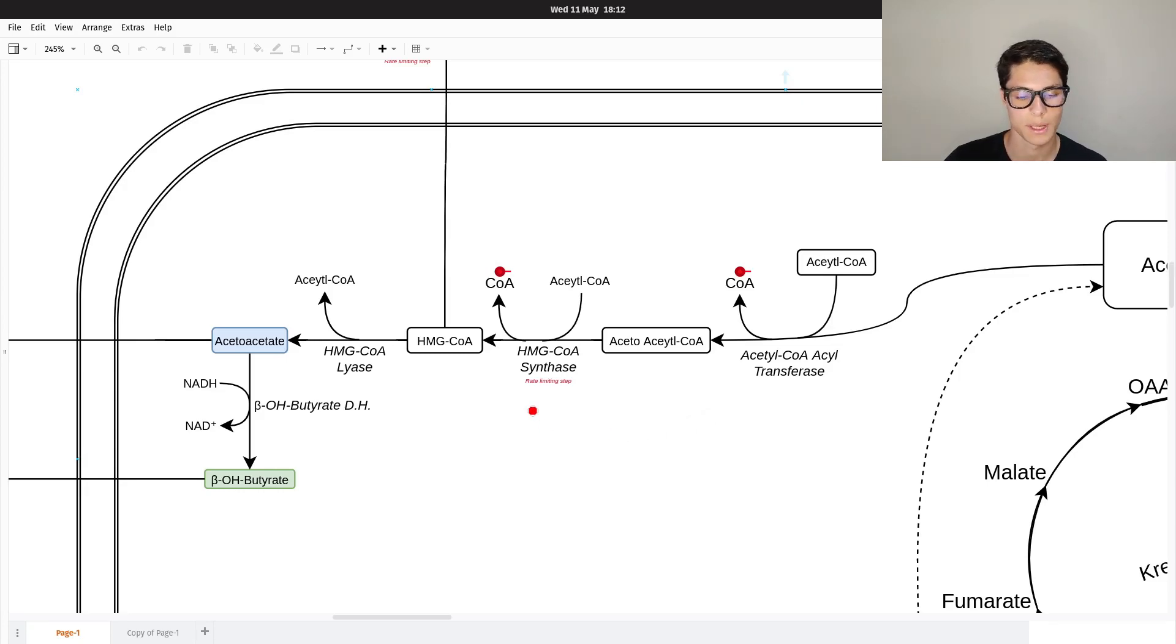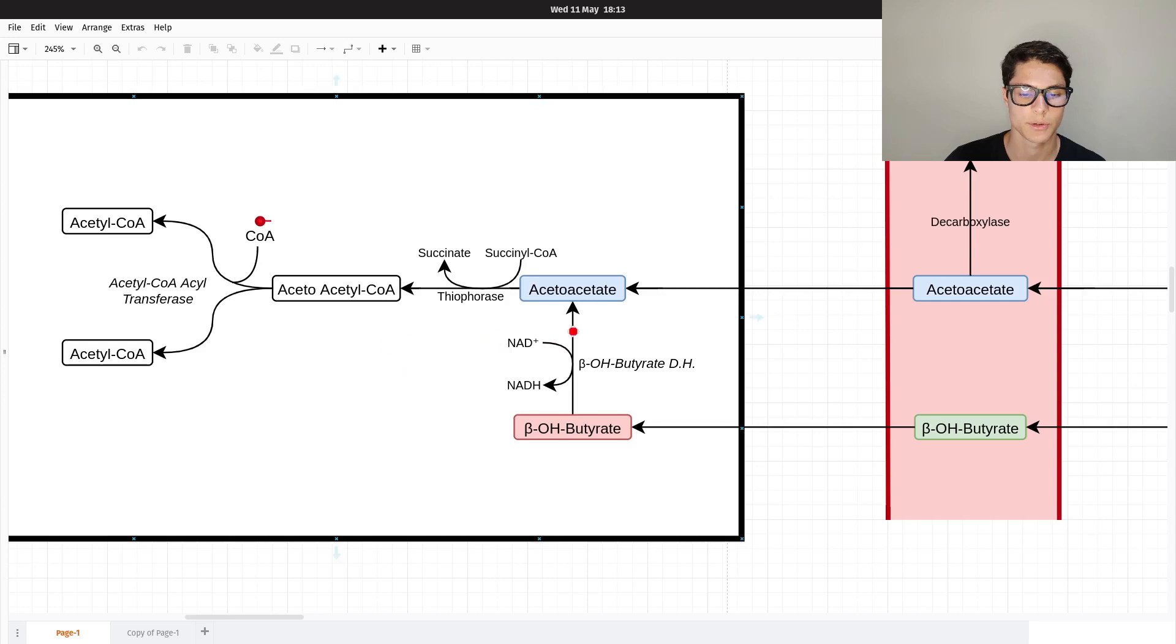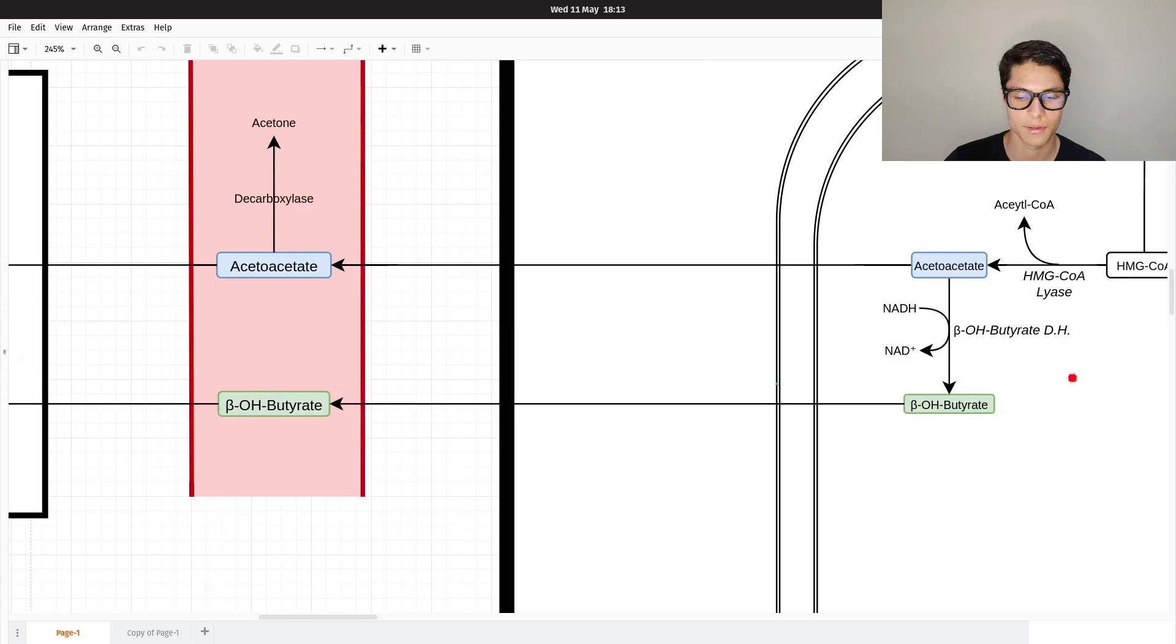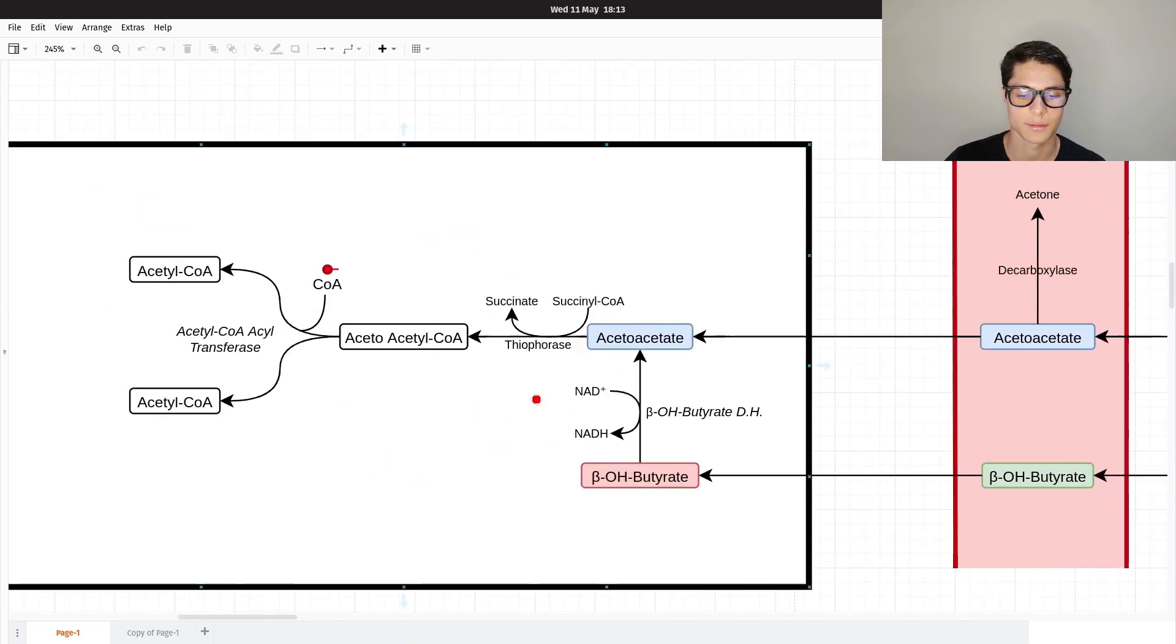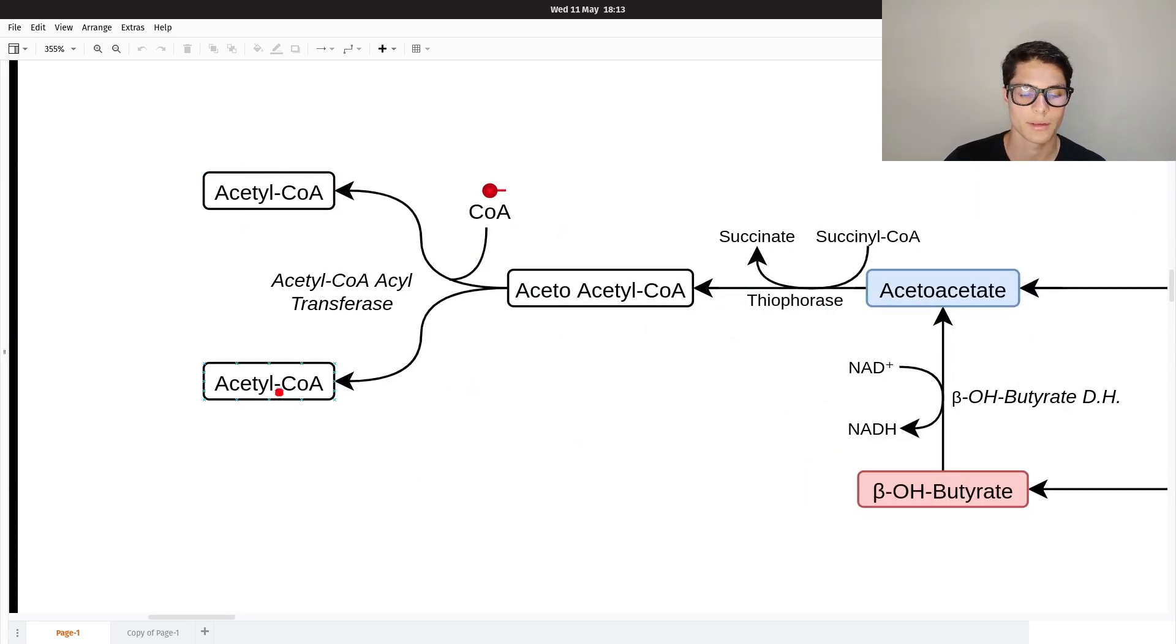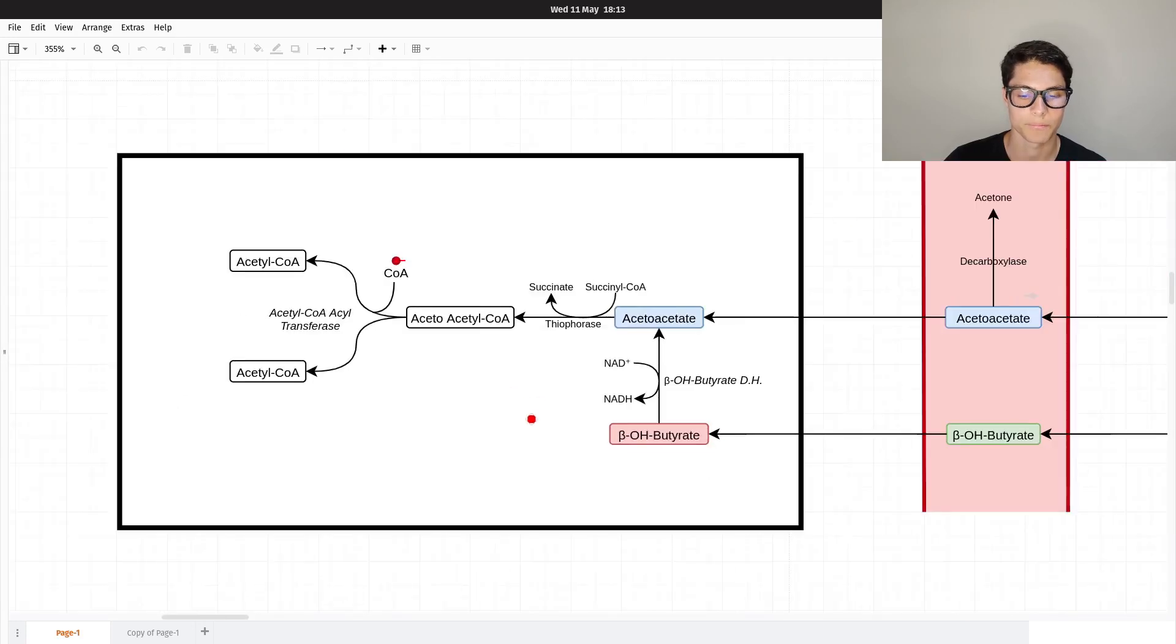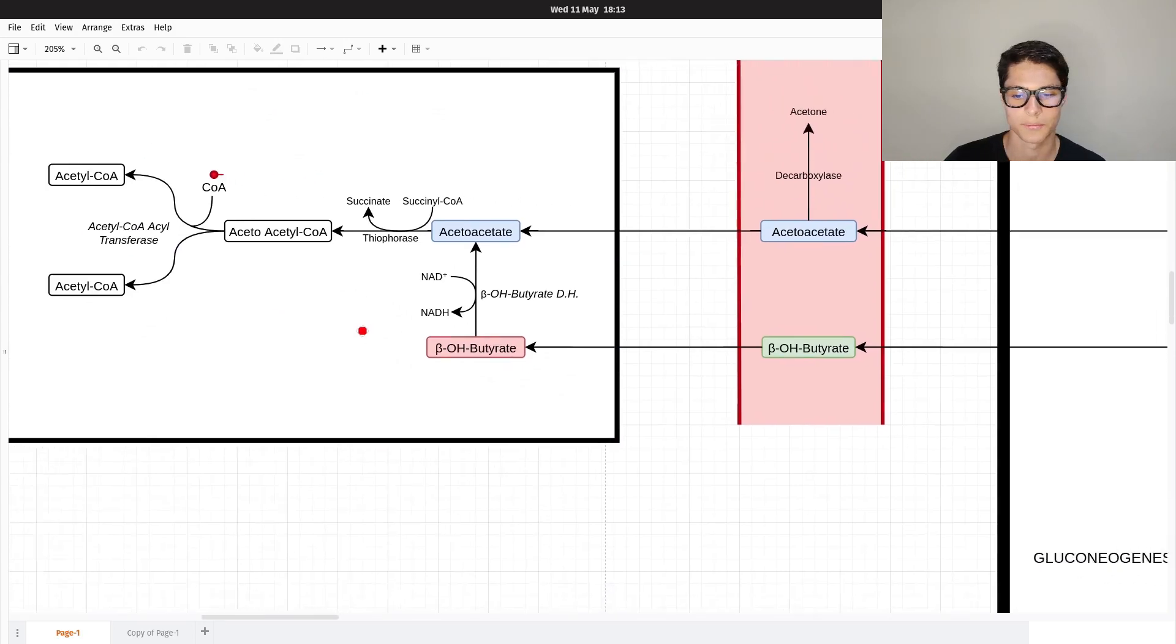The tissues can no longer use glucose because the glucose we have in the body is used for maintaining blood glucose levels. Instead of using that glucose, we're going to use these ketones to transfer the acetyl-CoA from one tissue to another—from the liver to the tissues like muscles and brain and all those tissues that can create acetyl-CoA without using glucose for that. And we can get energy from it.